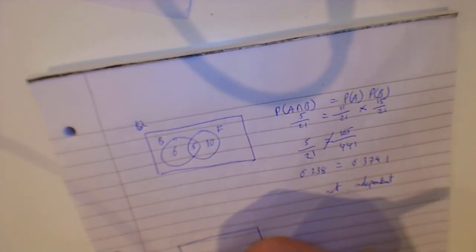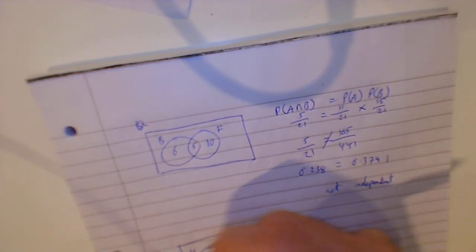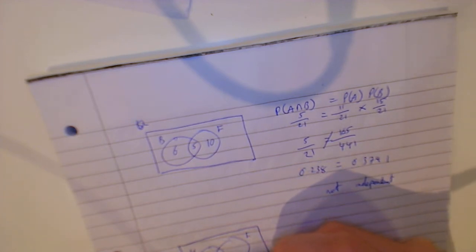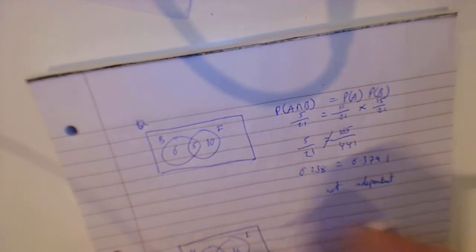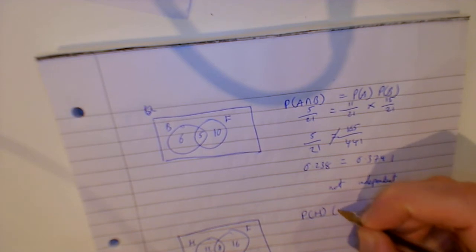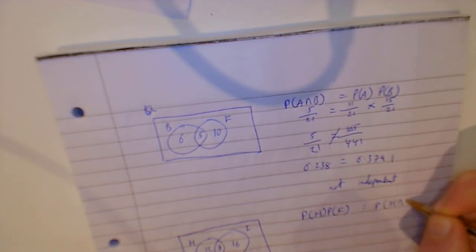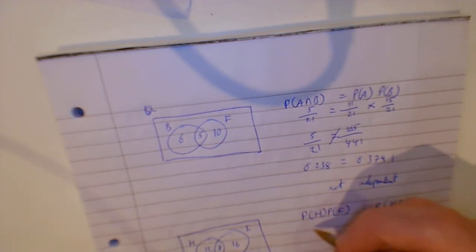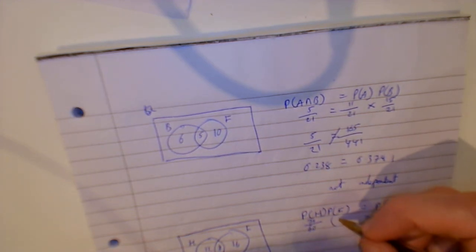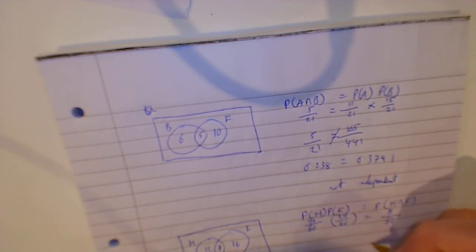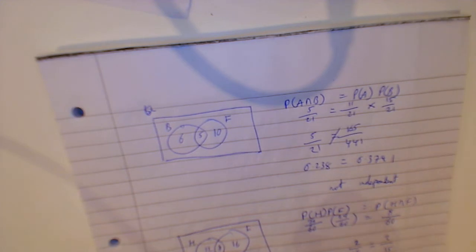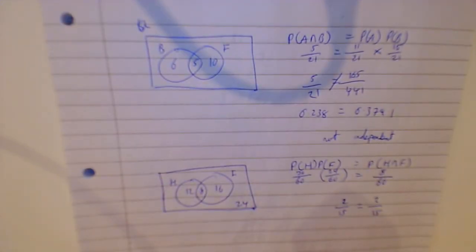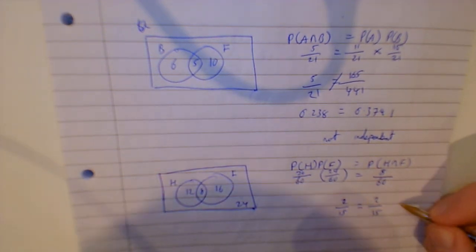Now the example from the book uses History and French, with an outside group. The numbers are 12, 8, and 16, with 24 outside, making 60 total. To check independence: P(H) times P(F) should equal P(H ∩ F). P(H ∩ F) is 8 over 60, P(H) is 20 over 60, and P(F) is 24 over 60. When you work it out, they all equal 2/15. So this example is independent.